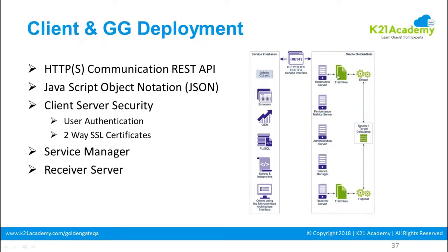The distribution server distributes the trail file. The Extract process provides the trail file to the distribution server, and the receiver server provides the trail file for the Replicat to apply. The flow is: source database → Extract process captures → writes to trail file → distribution server sends to receiver server. Multiple servers are configured; the administration server is where you configure processes and view performance. The receiver server receives data, writes it remotely, and then the Replicat process applies it to the target database.